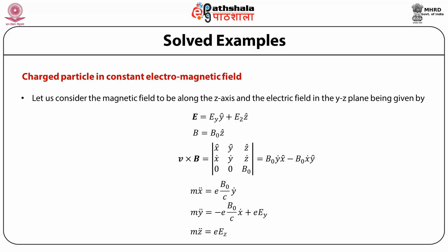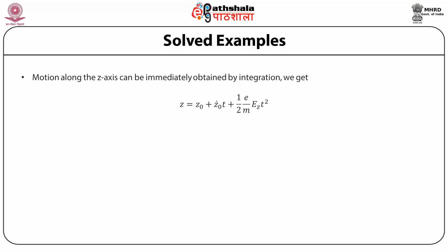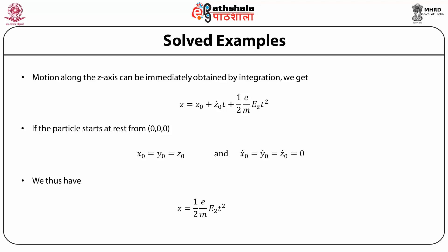The motion along the z direction is only affected by the electric field component Ez. Motion along the z axis can be immediately obtained by integrating the last equation twice, giving z = z0 + z0-dot · t + (1/2)(e/m) Ez · t². If the particle starts at rest at the origin so that x0 = y0 = z0 = 0 and all initial velocities are zero, then the solution along the z axis is z = (1/2)(e/m) Ez · t².